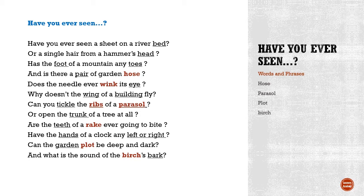The fourth line: is there a pair of garden hose? Hose means a pair of stocking or tights, and it is always called a pair. The garden hose is a flexible tube used to water the plants or to put out fire. So the poet is asking if there is a pair of garden hose — the hose worn as tights may have a pair, but a garden hose doesn't have a pair.